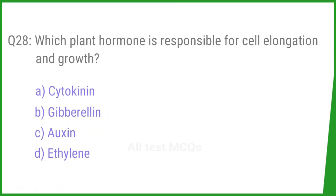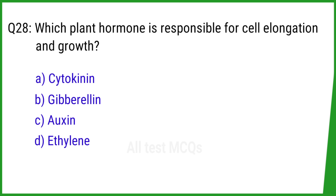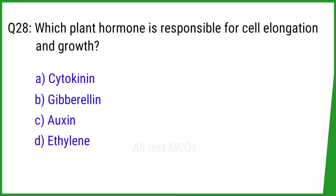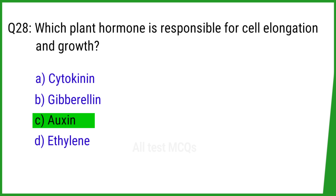Question number 28. Which plant hormone is responsible for cell elongation and growth? The correct answer is option C: Auxin.